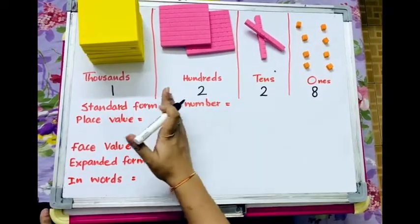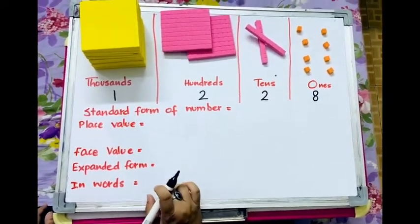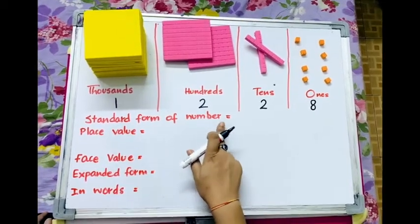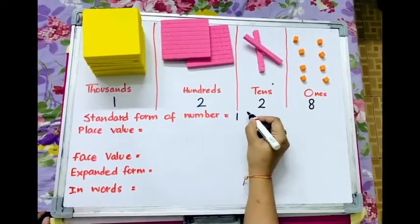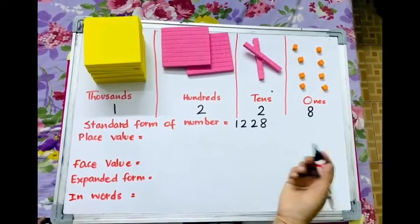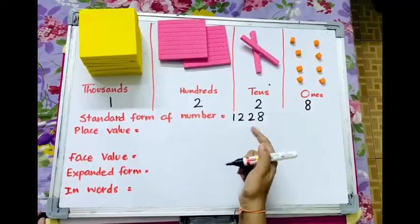These are the place of my digits. Thus, I can also find my standard form of number. My numeral is 1, 2, 2, 8, or you can say 1228.